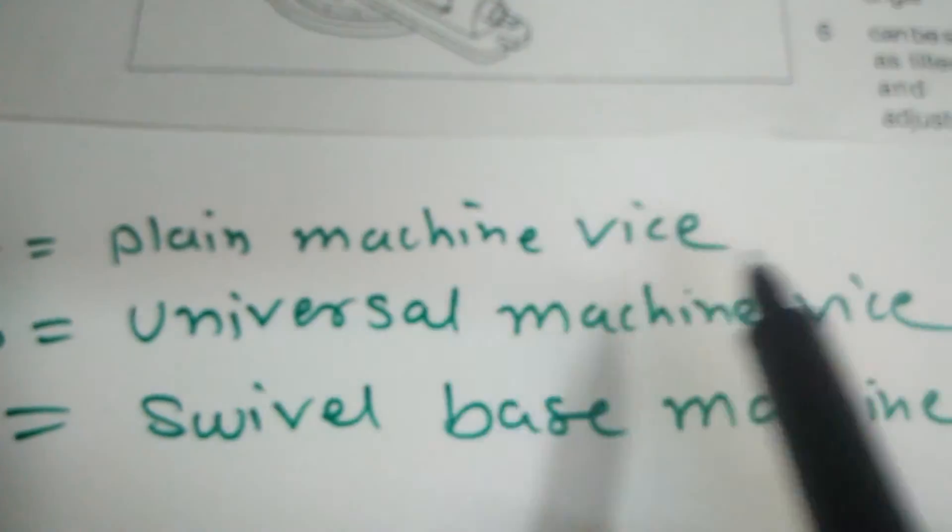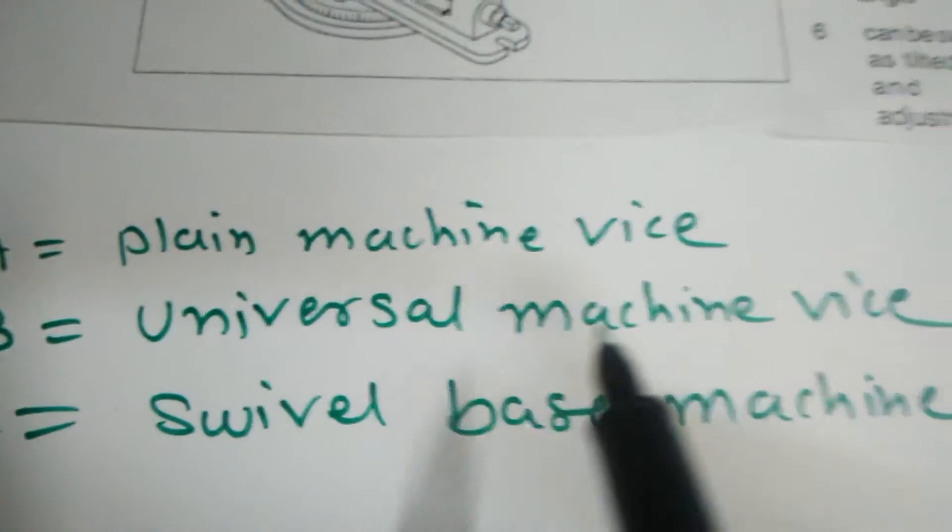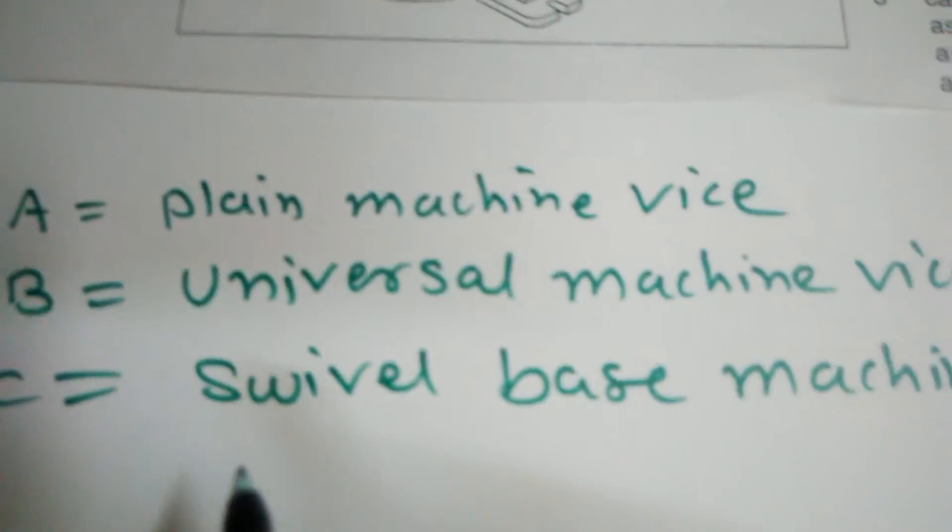A is Plain Machine Vice, B is Universal Machine Vice, and C is Swivel-based Machine Vice. These are the types.